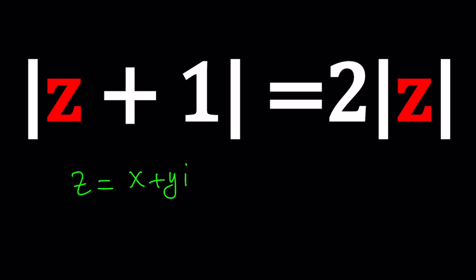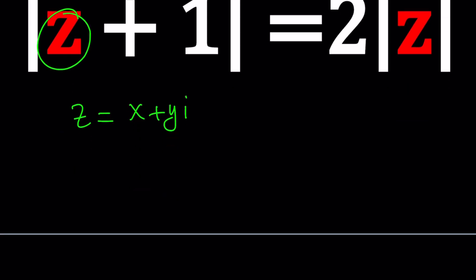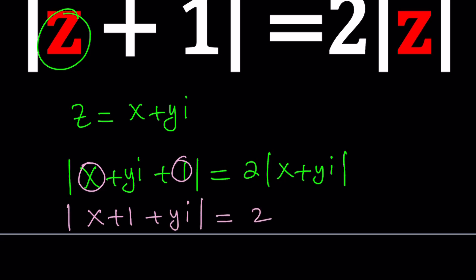So what do you do next? Plug it in. If Z is X plus Y I, then I got the X plus Y I plus one, and then the absolute value of that. This should equal two times the absolute value of X plus Y I. Here comes the definition of absolute values. How do you find the absolute value? Well, let's simplify it first. Combine the real parts, make it one thing, and then add the imaginary part, and then do the same thing here. So far so good.